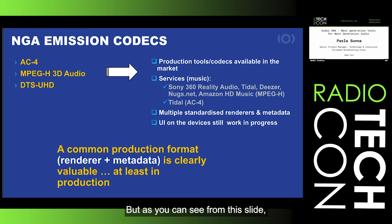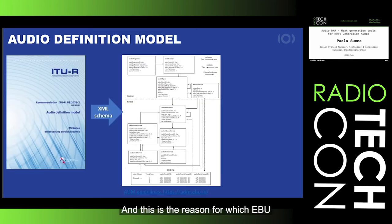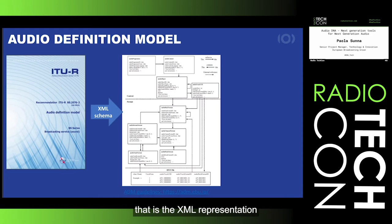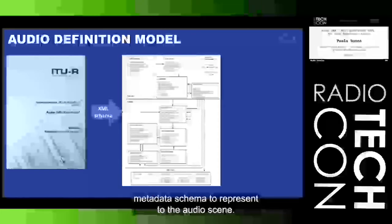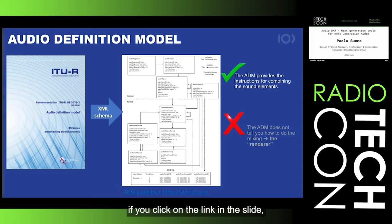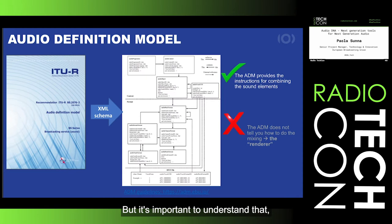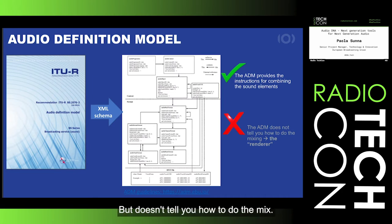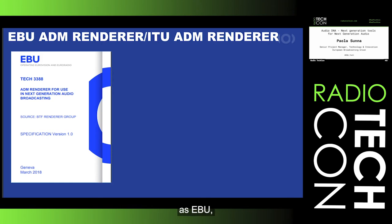As you can see from this slide, a common production format — meaning both the renderer and the metadata — is clearly valuable, at least in production. This is the reason EBU is pushing for the Audio Definition Model (ADM), which is an XML representation metadata schema to describe the audio scene. You can access the ADM guidelines with concrete examples via the link on the slide. Importantly, ADM provides the structure for combining sound elements but doesn't tell you how to do the mix — for that you need the renderer. In 2018, as EBU, we produced recommendation TEC 3388: ADM Renderer for Use in Next Generation Audio Broadcasting.